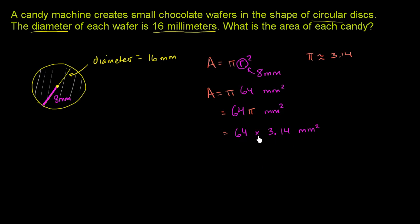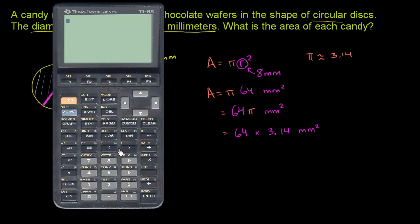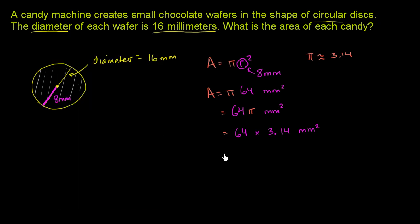And we can get our calculator to figure out what this will be in decimal form. So we have 64 times 3.14 gives us 200.96. So we could say that the area is approximately equal to 200.96 square millimeters.